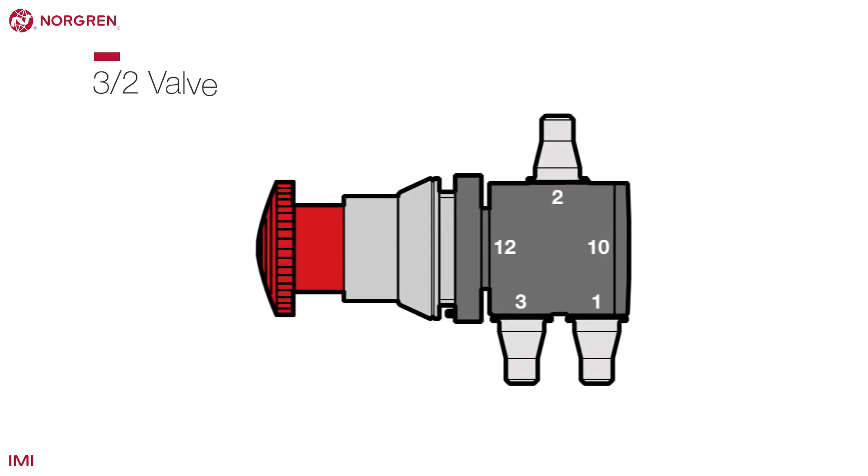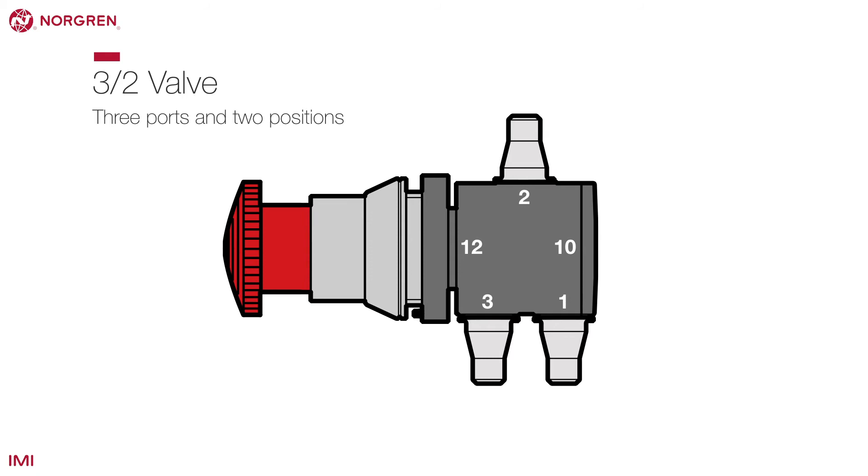A 3-2 valve has 3 ports and 2 positions. It works in a similar way to the 2-2 valve, but with the addition of an exhaust, labelled as port 3.